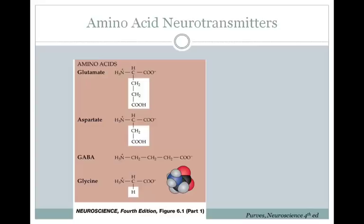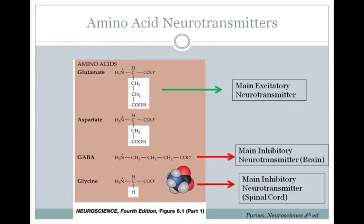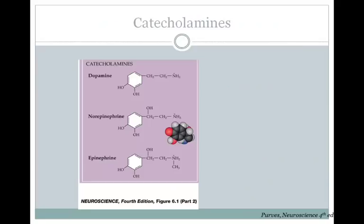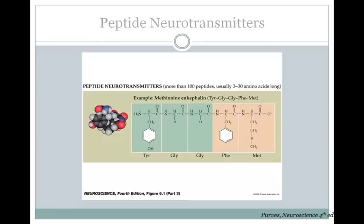Many different substances can be used as neurotransmitters. One of the most common classes are the amino acid neurotransmitters: glutamate is the main excitatory neurotransmitter, GABA is the main inhibitory neurotransmitter in the brain, and glycine is the main inhibitory neurotransmitter in the spinal cord. The catecholamines are another common class, including norepinephrine and epinephrine — the main neurotransmitters for the autonomic nervous system — as well as dopamine, which is involved in mood, reward, and movement. There are also many peptide neurotransmitters, usually 3 to 30 amino acids long, including the opioids such as met-enkephalin, and the tachykinins like substance P. Peptide neurotransmitters are often co-released with other neurotransmitters like glutamate or GABA.